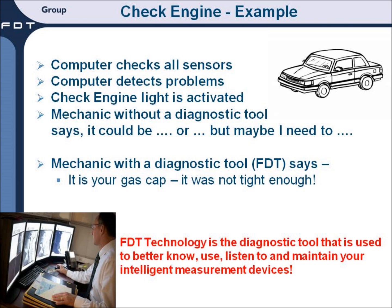First, the computer is checking all the sensors — that's going on all the time. The computer detects a problem and the check engine light is activated. Now a mechanic without a good diagnostic tool either does not know what the problem is or just has to use his experience as to what the problem might be. On the other hand, a mechanic with a good diagnostic tool like FTT-enabled technology can easily and quickly detect that the problem is very simple — in this particular example, it is as easy as the gas cap being loose, which created the check engine light situation.